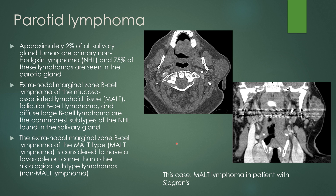Approximately 2% of all salivary gland tumors are primary non-Hodgkin lymphoma, and 75% of these are seen in the parotid gland. You can get MALT B-cell lymphoma, follicular B-cell lymphoma, and diffuse large B-cell lymphoma — the most common subtypes found in the salivary gland. The MALT type is considered to have a more favorable outcome. This was a MALT lymphoma in a patient with Sjogren's: a lobulated heterogeneous density mass with internal areas of hypodensity, almost a striated appearance, which increased rapidly in size over time.